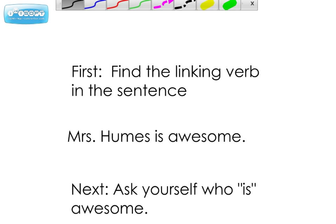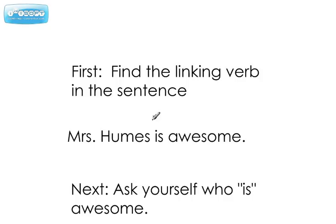When you're trying to find the parts of a sentence, the first thing you need to do is find the linking verb. So I have a sentence here: Mrs. Humes is awesome. Our linking verb here is 'is,' so we're going to put LV above it. Who is? That would be Mrs. Humes. All right, so now we have a subject and a verb.